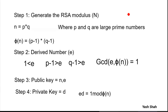Then we generate phi of n. Phi of n is nothing but (P minus 1) multiplied by (Q minus 1). Step two: we have to select a random number E, but that E should follow some conditions.